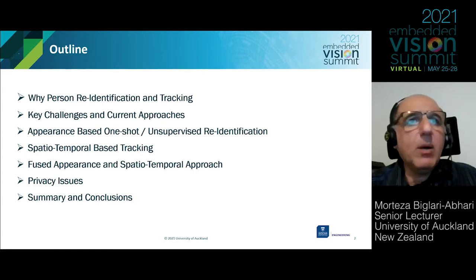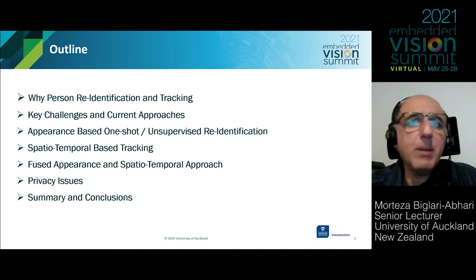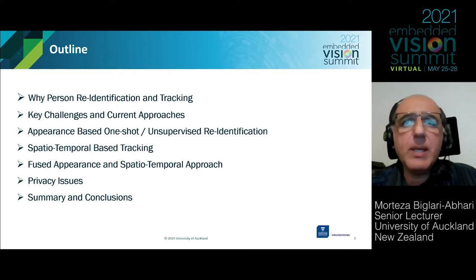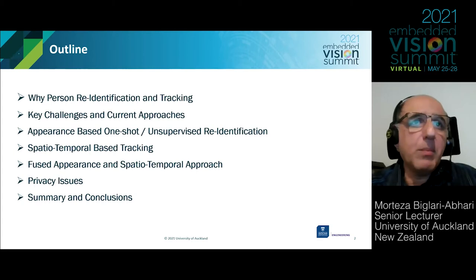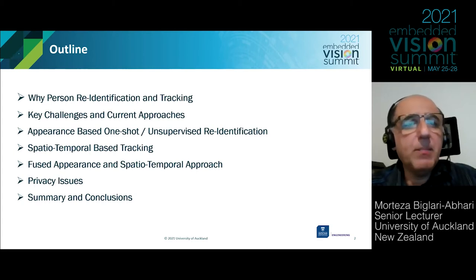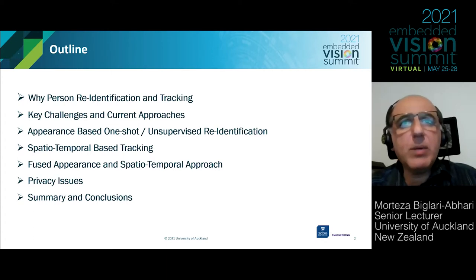We'll see how an appearance-based one-shot unsupervised re-identification approach can be implemented, considering the trade-offs between accuracy and computation time, especially for real-time processing. Then we compare it with a spatio-temporal-based tracking approach and discuss the potential challenges. To improve the accuracy, we can fuse these two approaches.